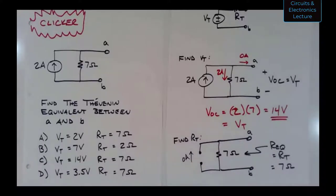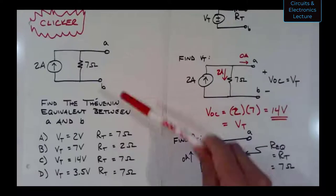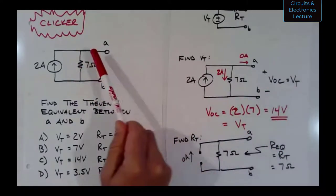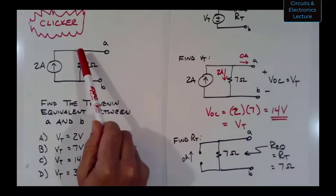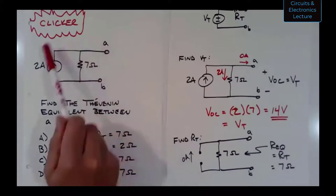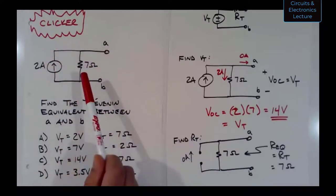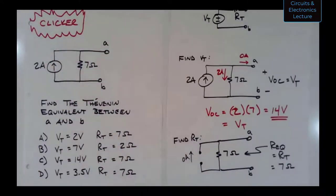That's a fairly straightforward Thevenin problem. Could you also use node voltage analysis to solve for VOC? You sure could — you'd get an equation that looks a lot like Ohm's law. If you put a ground at the bottom, call VOC the top node voltage, and write your KCL, you'll get the same equation. That works too.